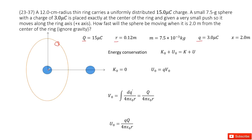We give the sphere a very small push, so it will move to a new location along the ring's axis — the x-axis. The question asks how fast the spherical object will be moving when it reaches the location that is 2 meters from the center.